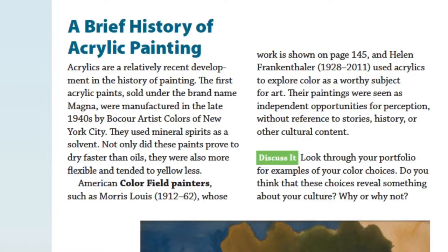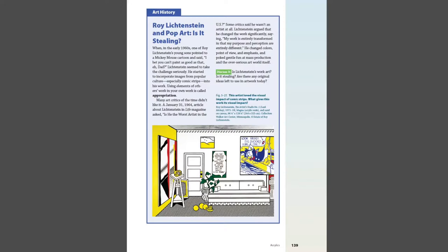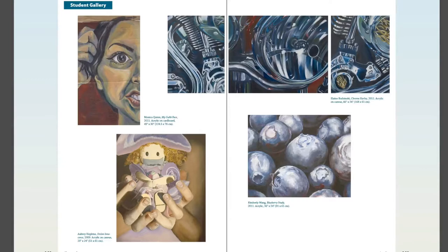An art history sidebar appears in every chapter to showcase the work of an artist from the past and explain how it relates to the chapter content. Every chapter includes a two-page student gallery where students can observe, discuss, and critique the work of students their own age.